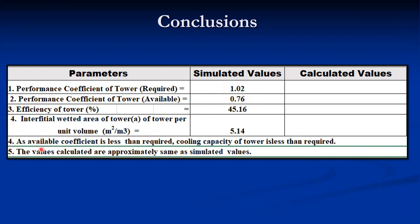The conclusion is: since the available coefficient (0.76) is less than the required value (1.02), the cooling capacity of the tower is less than expected. The interfacial weighted area of the tower per unit volume is 5.15 m²/m³. These are simulated values. A simulator is provided — by inputting all the conditions, the simulator calculates all these values. You have to perform the calculations manually and validate your results with the help of the simulator.